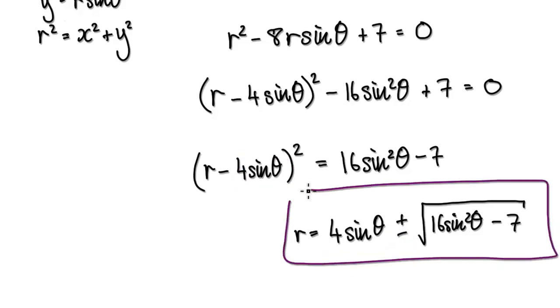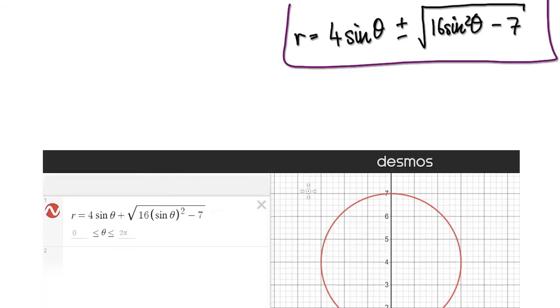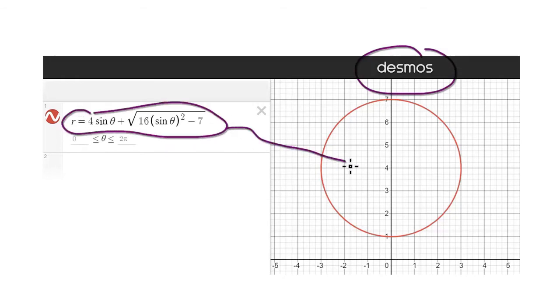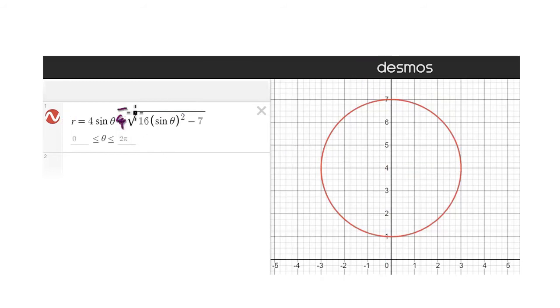If you jump to desmos.com and punch this in, it will give you a circle of radius 3 that has been shifted up by 4. You could try minus if you want to.